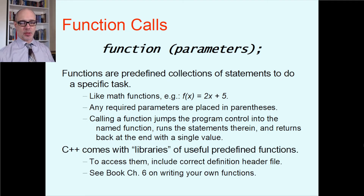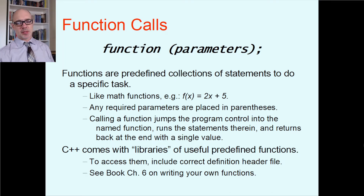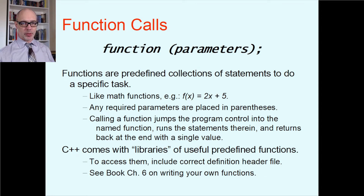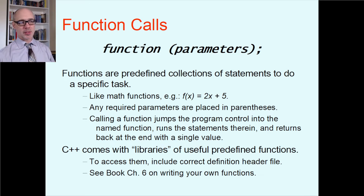C++ comes with many, many libraries — any language does really — of useful predefined functions. In order to access them, you have to include the correct definition header file. For example, so far we've been using the cin and the cout object, and that's why we needed to #include iostream, which defines those objects. For all other things in the C++ library, you will have to know what library to include to get access to that stuff.